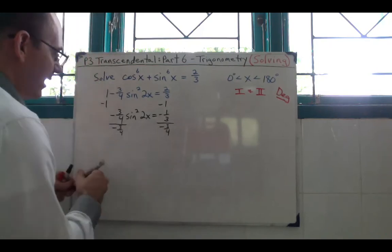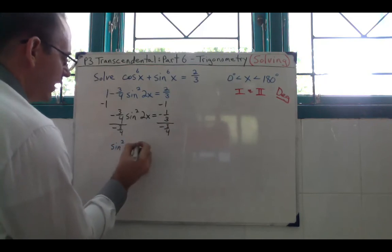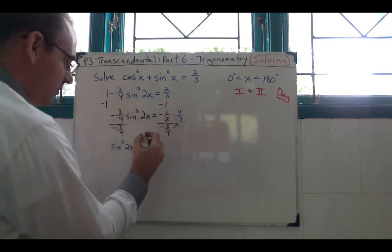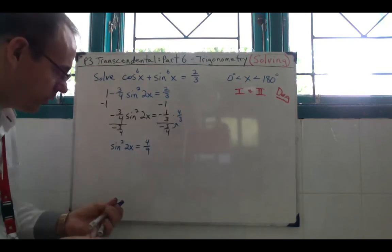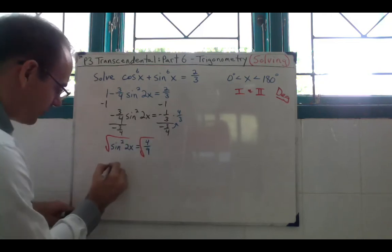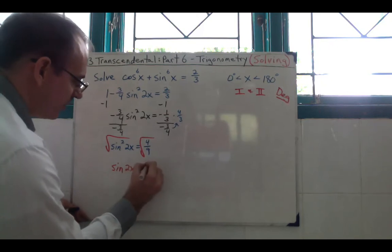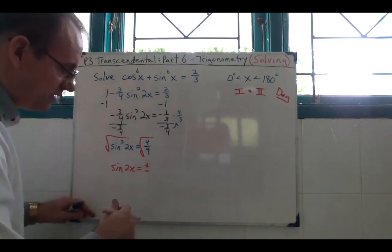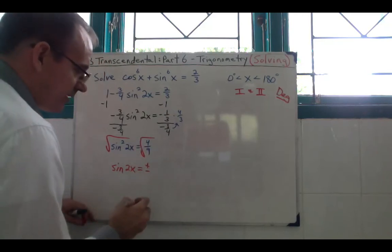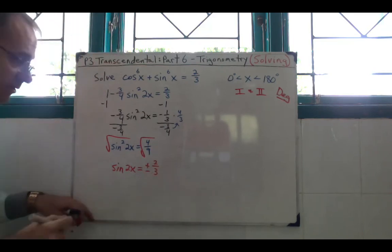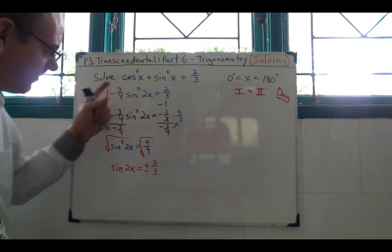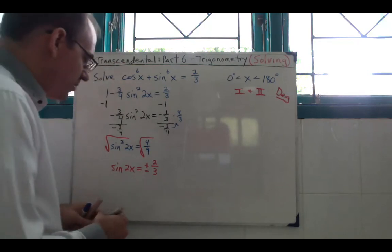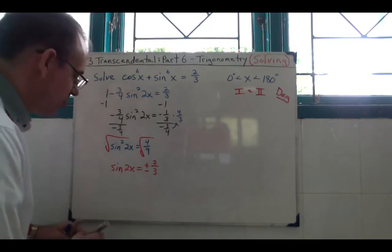Dividing both sides by −3/4 — that is, multiplying by −4/3 — the negatives cancel and we get sin²(2x) = 4/9. Then we square root both sides. We get sin(2x) = ±2/3. Don't forget the plus or minus because we're doing a square root — you need to account for both positive and negative roots. Now we've done all the algebra. At this point we're at the trigonometric part, so remember: when you do the trigonometric part, that is where you pay attention to the quadrants.